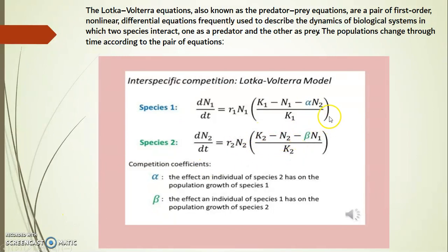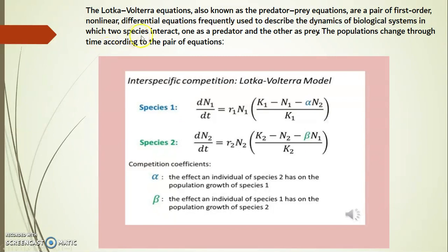What about alpha and beta? Alpha is the per capita competitive efficiency of species 2 on species 1, or the effect an individual of species 2 has on the population of species 1. Beta is the effect an individual of species 1 has on the population of species 2, or the per capita competitive efficiency of species 1 on species 2. The growth rate dN/dt will totally depend on alpha, beta, N1, and N2.